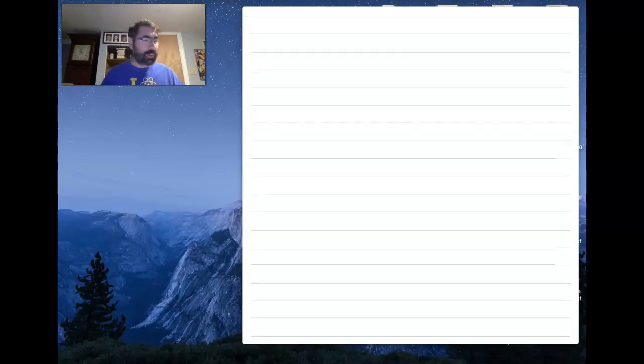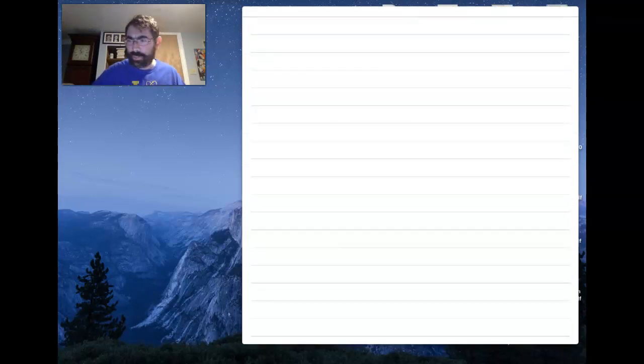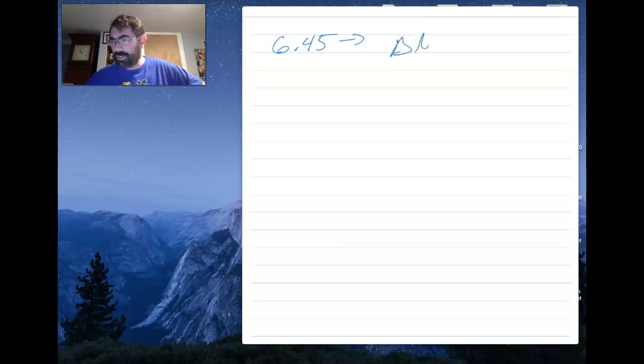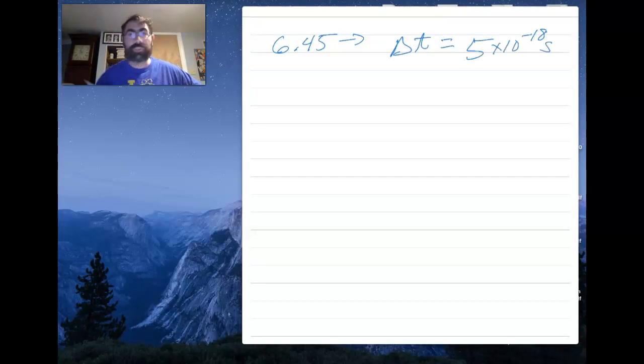Let me take a look at one of the problems in the book. This is problem 6.45. What this problem says is you have an excited state of a certain nucleus with a lifetime delta t of 5 times 10 to the minus 18 seconds. Find the minimum possible uncertainty in the energy.